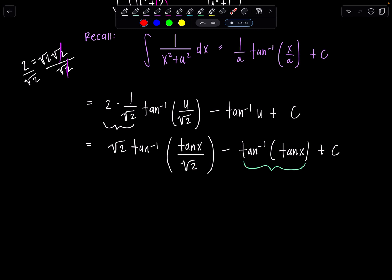I wouldn't rationalize. It doesn't look any better if you do, so we're just going to leave it. Radical two tan inverse of tan x over radical two minus x plus c.